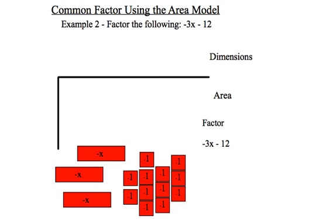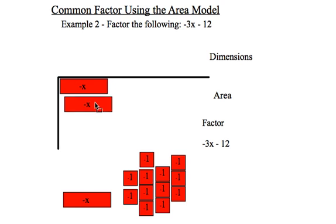Let's try example 2. In example 2, I have negative 3x minus 12, and I wish to factor that. So I'm going to start by arranging some of these pieces. Again, I always start with the big ones.